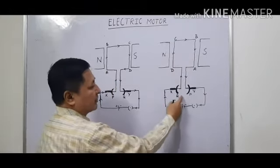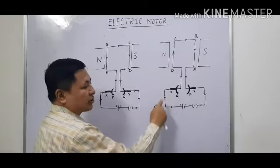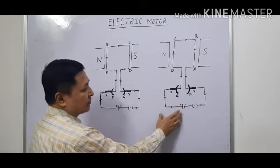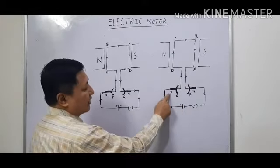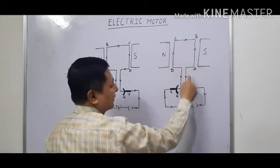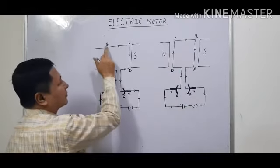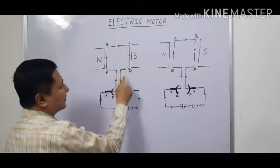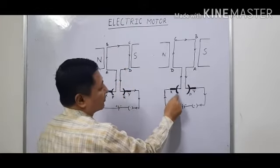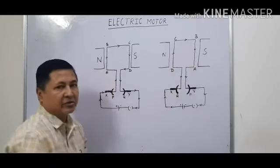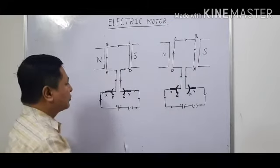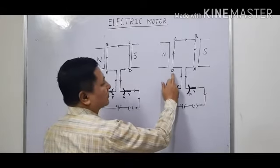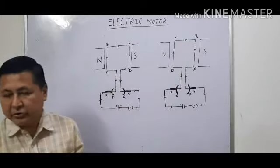As the coil takes the half turn, side CD has shifted to one side and AB has gone to the other side. Along with it, the split ring has also changed its position. The only thing which is stationary is the carbon brush X and Y. Now the direction of current gets reversed — it flows from X, then Q, D, C, B, A, P, and Y. This reversal is due to the split ring P and Q, which is why they are also known as the commutator.